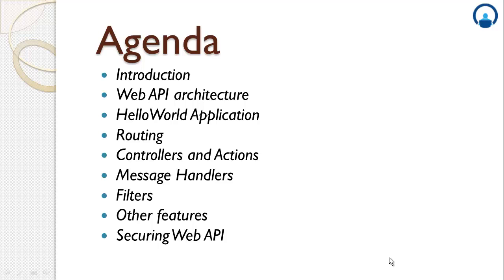We will then cover the various features and framework components of the Web API, which includes the routing, the controllers, and the actions. The Web API provides a number of extensibility points in the form of message handlers and filters, which will be covered later in the course. Finally, the course will be wrapped up with other features including dependency injection and hosting, and lastly a very important aspect of any application, which is security.